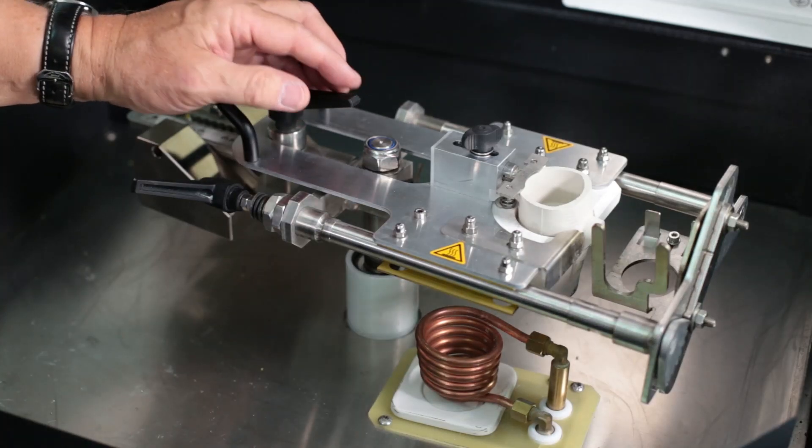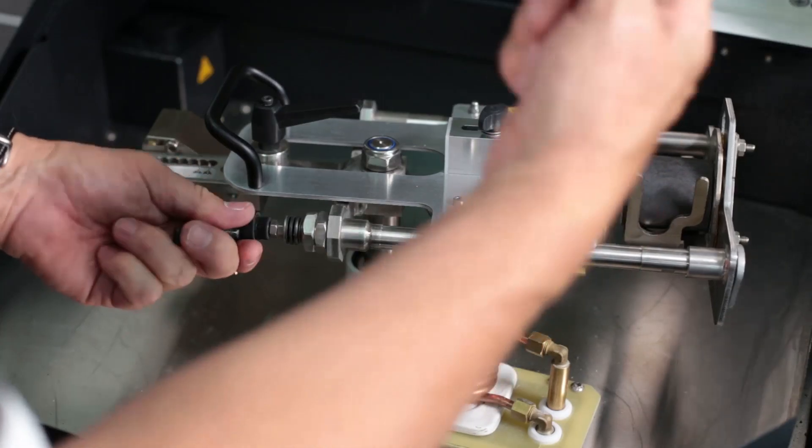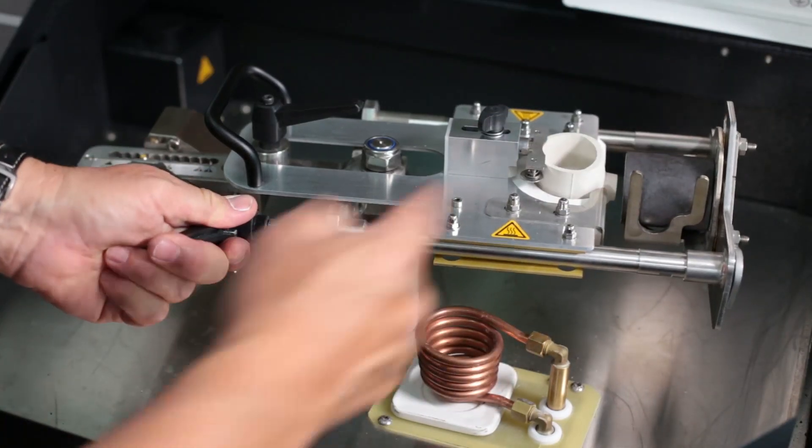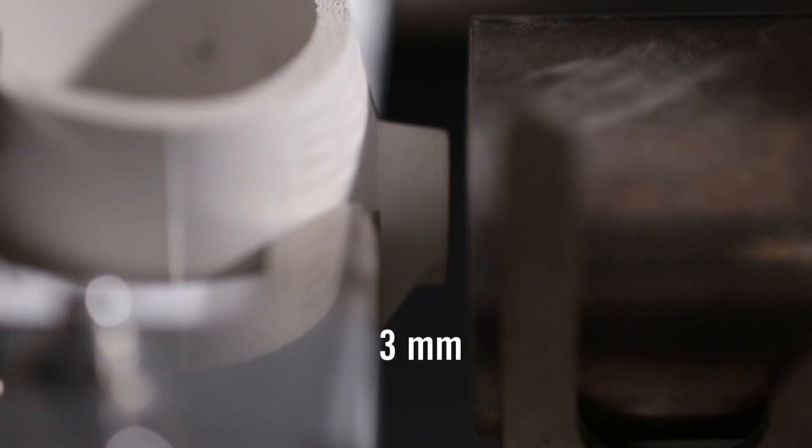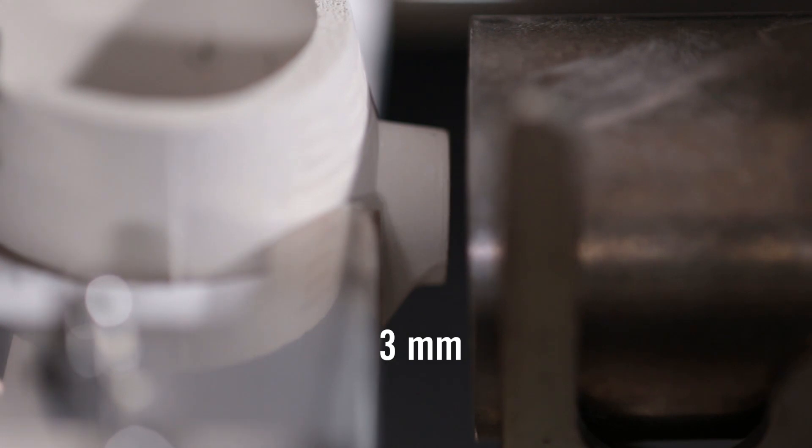In preparation for the casting, the position of the mold can be optimally adjusted with the aid of a test mold, so that the alloy can flow directly into the mold after the casting has been triggered. A distance of 3 mm between the top of the mold and the ceramic crucible receiving plate should be kept.